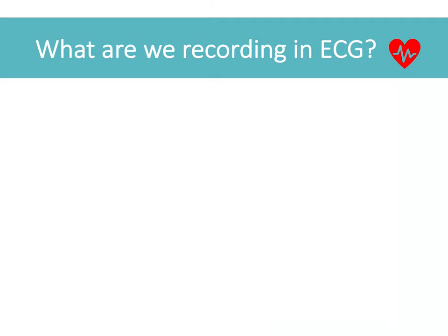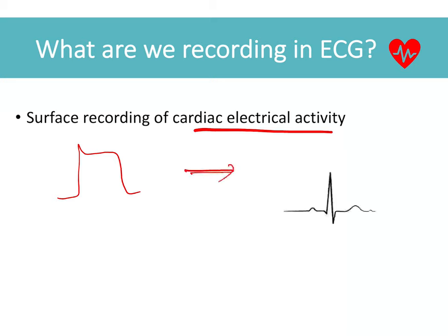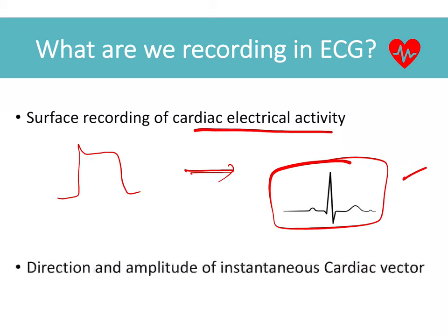Let's ask the fundamental question: what are we actually recording in an ECG? One basic answer is it's a surface recording of cardiac electrical activity — we have millions of cardiomyocytes which have an action potential, and the sum of all action potentials recorded from the surface looks like this. But this simple definition will not help us explain all the phenomena underlying the ECG, so we are going to define something called the instantaneous cardiac vector.